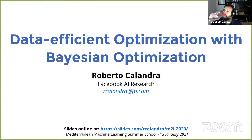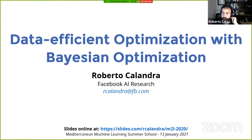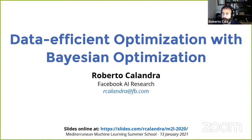I'm very happy to introduce Roberto. Roberto Calandra is a friend since seven years ago, and now he's a research scientist at Facebook AI Research. He was a postdoc at the University of California, Berkeley, in the Berkeley Artificial Intelligence Research Laboratory, working with Sergei Levine.